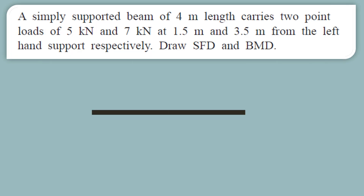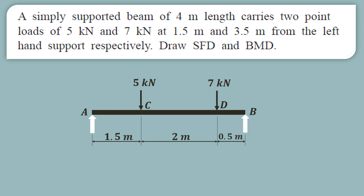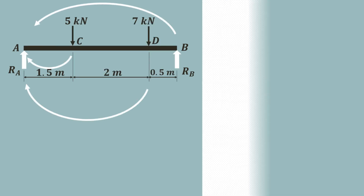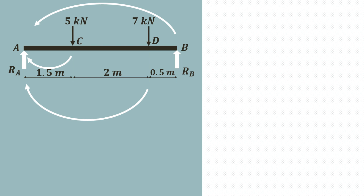First we will find out the reactions for this particular arrangement as shown. We need to find RA and RB. The first step is to apply the first condition of equilibrium: summation of forces in the y direction is equal to zero. Upward forces are considered positive whereas downward forces are considered negative.